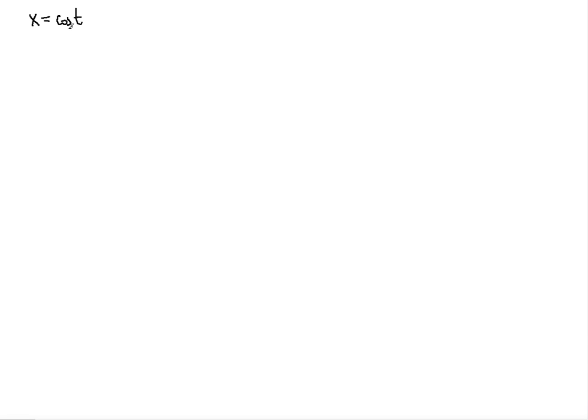In this video we're going to learn how to find the area enclosed by the given curve represented by two parametric equations. The curve has equation x equal to cosine of t, y equal to sine 2t, and the t range will be from pi over 2 all the way to 3pi over 2.